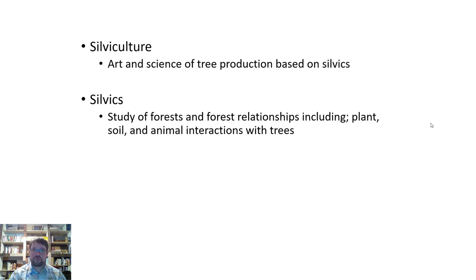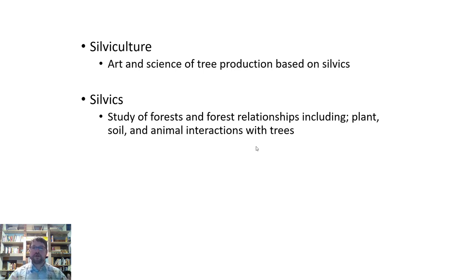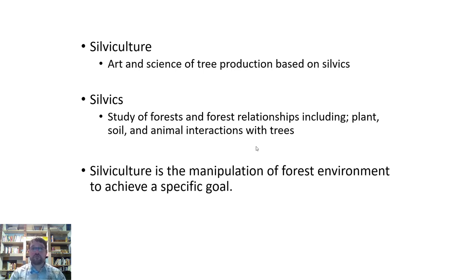We'll talk about different types of plants, soils, and animal interactions with trees. Silviculture is tree production based on the science and ecology of how the forest works — how everything interacts with each other, what's the soil type, what kind of harvest are you going to have if you have large populations of small rodents that eat seeds or newly planted trees. So silviculture in general is the manipulation of forest environments.